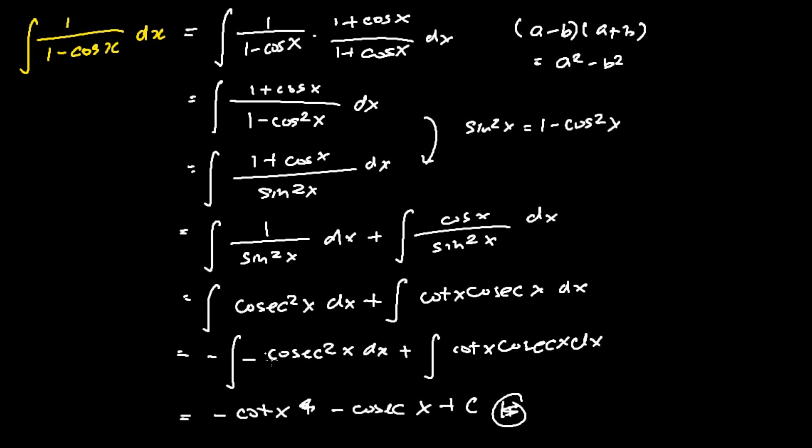Hence the final answer for the integral of 1 over 1 minus cosine x dx is negative cotangent x minus cosecant x plus C.